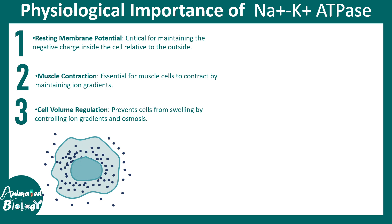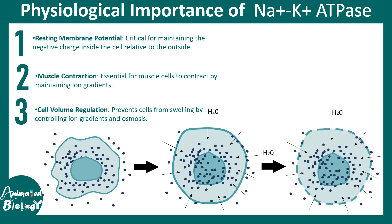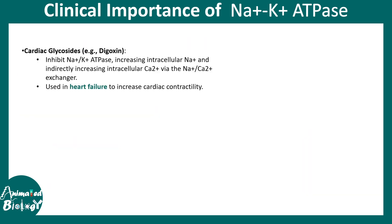Sodium potassium ATPase also helps in cell volume regulation. Imagine there are too many solutes inside the cell — water would enter by osmosis, causing the cell to swell and eventually burst. This ATPase prevents that by pumping ions against the concentration gradient to maintain a steady state inside and outside the cell.